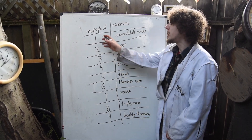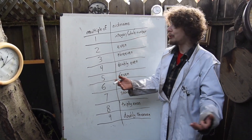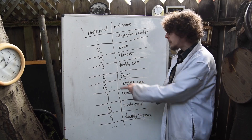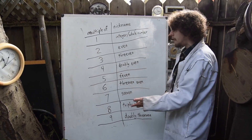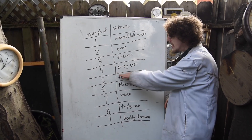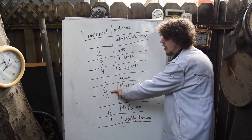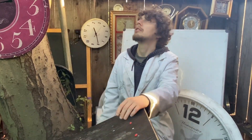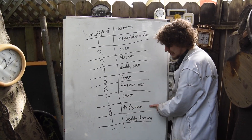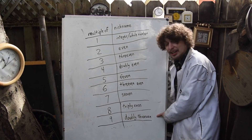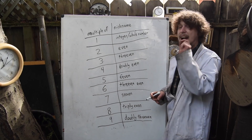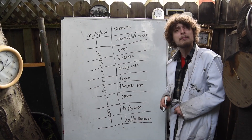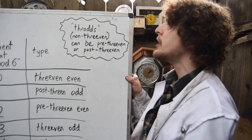Looking at the full list of possible nicknames: multiples of one are just integers or whole numbers, multiples of two are even, multiples of three should be more commonly known as threvan, then we get doubly evens, and then a great star of many aspects of mathematics and nature — threvan even numbers. Then we could call multiples of seven 'sieven' if we wanted, then a triply even, and a doubly threvan. The magical properties that nine has in our counting system are actually properties that doubly threvan numbers have in any base.